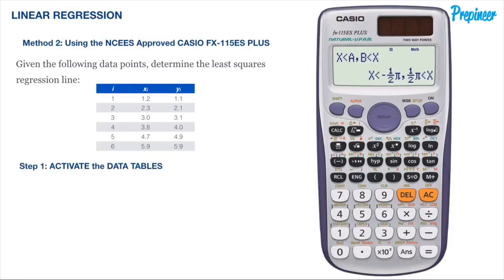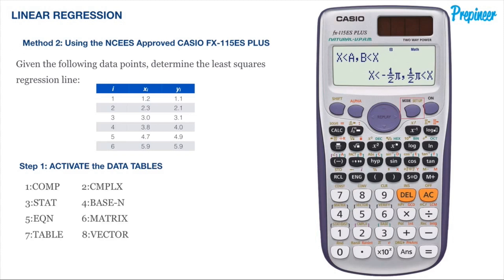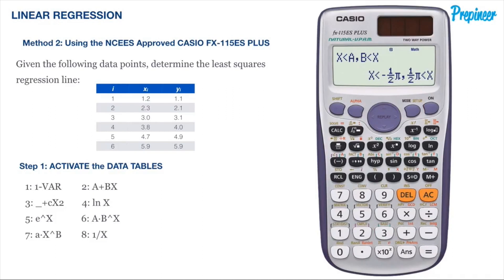The first step is to activate the data table so we can store the data given in the problem statement. To do this, first hit the mode button to come to a menu that looks similar to this. Once on this screen, press 3 to select option 3 for statistics, and you will be brought to a menu that looks similar to this.